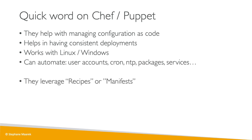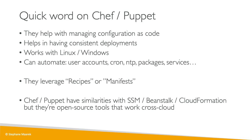Some terminology: in Chef, it's called Recipes, and in Puppet, it's called Manifest. They leverage Recipes or Manifest — which is basically code — to apply configuration. They have a lot of similarities with AWS products such as SSM, Elastic Beanstalk, and CloudFormation. The reason you'd use Chef and Puppet in AWS is because they're open source and work across different clouds — Amazon, Microsoft Azure, Google Cloud — giving you one way to manage all your instances across providers.